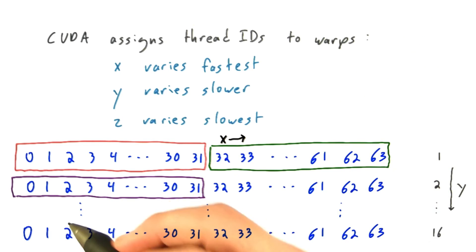And yet another warp with Y ID equal to 1, and X ID varying from 0 to 31, and so forth.